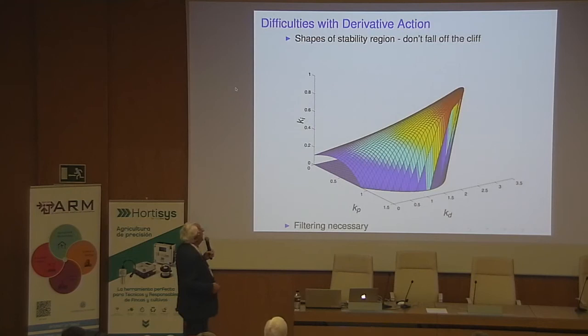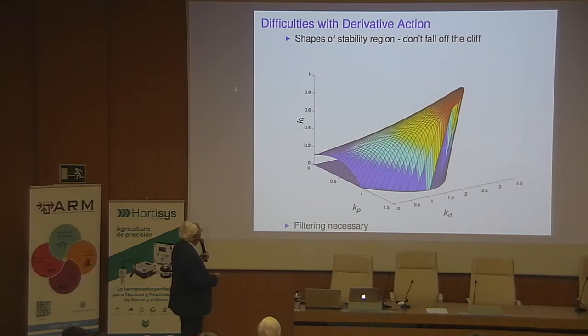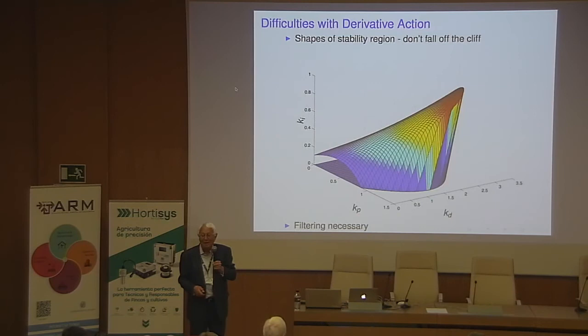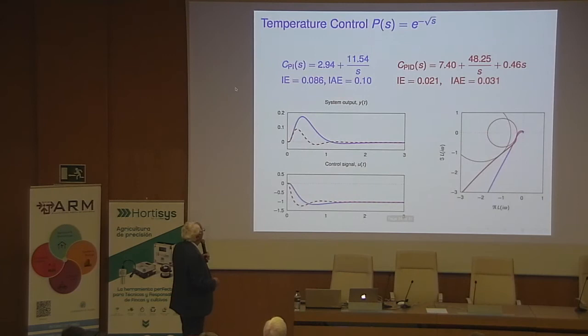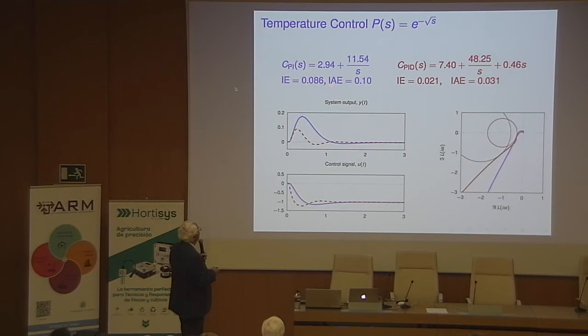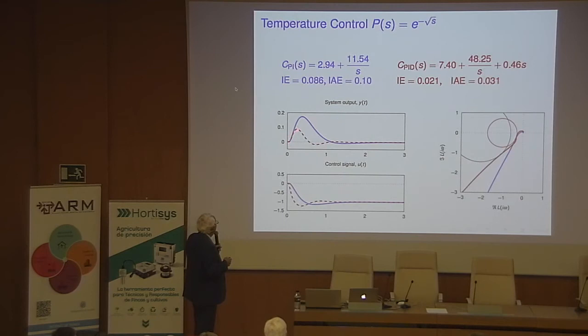For PID control, the robustness region shows proportional gain, derivative gain, and integral gain. There's a very sharp tip in the region — you would like to push integral gain high, but if you do, you're sitting at the edge. Tore and I say: don't fall off the derivative cliff. In a typical example, switching from a PI controller to a PID controller gives dramatically better performance. The main difference is that you are reacting faster, and that's why you get better load disturbance performance.